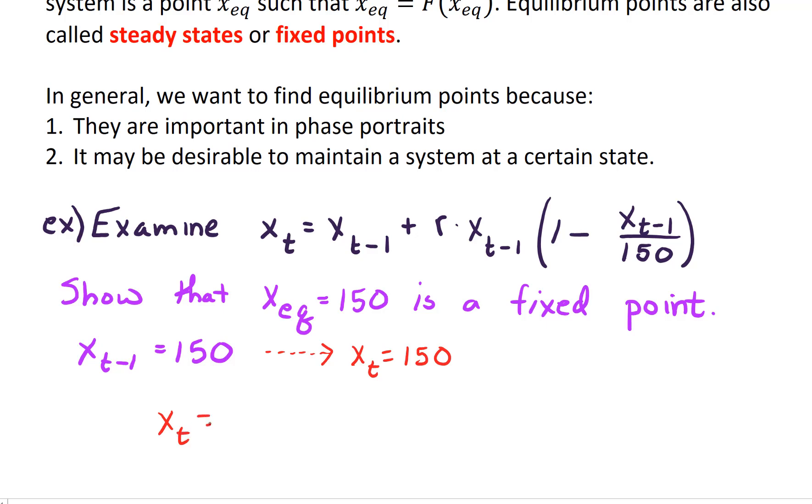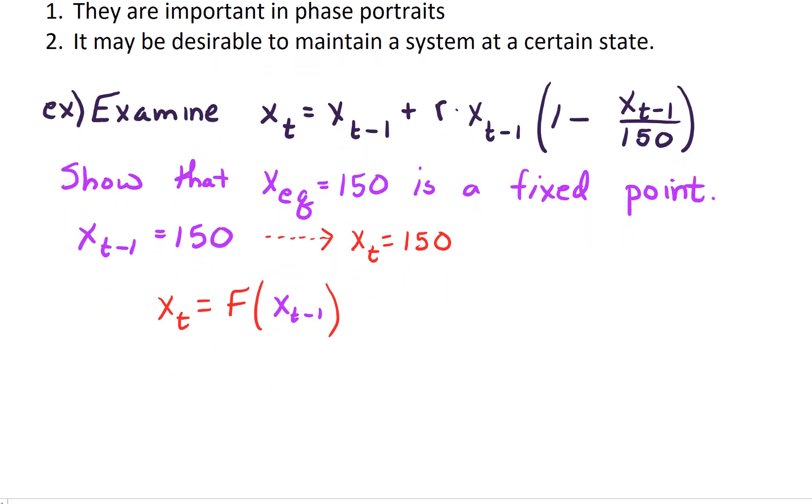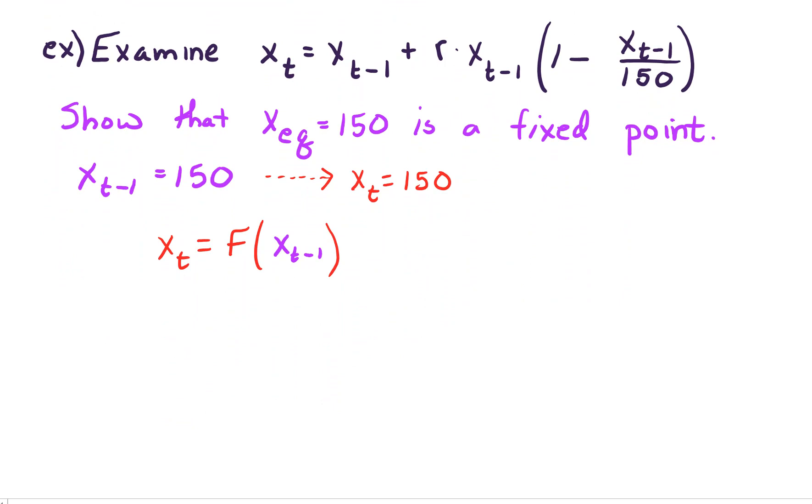In other words, x sub t equals this logistic growth model with the x sub t minus 1 fed into it. Okay, so that's a fixed point. So let's see how this would work.